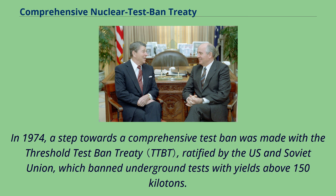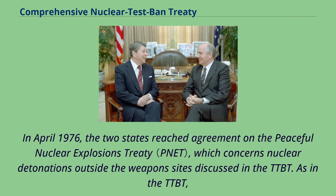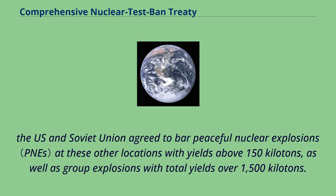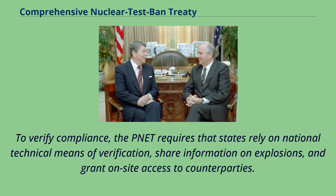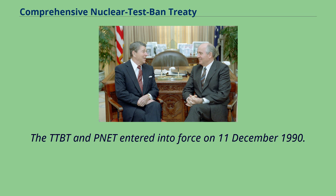In 1974, a step towards a comprehensive test ban was made with the Threshold Test Ban Treaty, ratified by the U.S. and Soviet Union, which banned underground tests with yields above 150 kilotons. In April 1976, the two states reached agreement on the Peaceful Nuclear Explosions Treaty, which concerns nuclear detonations outside the weapons sites discussed in the TTBT. The U.S. and Soviet Union agreed to bar peaceful nuclear explosions at these other locations with yields above 150 kilotons, as well as group explosions with total yields over 1,500 kilotons. To verify compliance, the PNET requires that states rely on national technical means of verification, share information on explosions, and grant on-site access to counterparties. The TTBT and PNET entered into force on December 11, 1990.